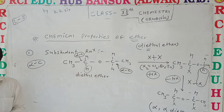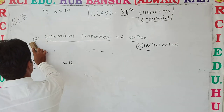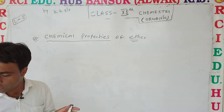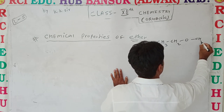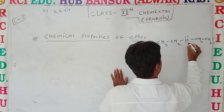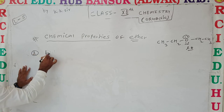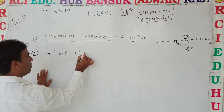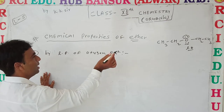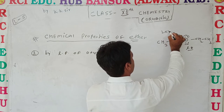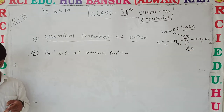The next reaction is based on the structure of diethyl ether: CH3-CH2-O-CH2-CH3. Oxygen in this structure has lone pairs. The second type of reaction is given by the lone pair of oxygen.